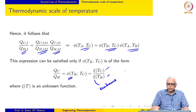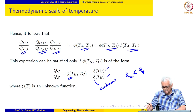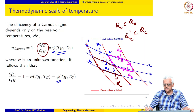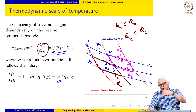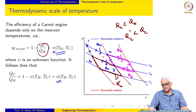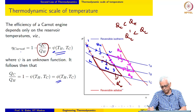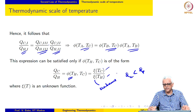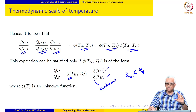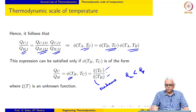Bearing in mind that QC is less than QH, as the reservoir temperature decreases, the heat interaction also decreases — provided we travel between the same two reversible adiabats. So Xe(TC) is placed in the numerator and Xe(TH) in the denominator to satisfy this constraint. Writing it the other way would not be consistent with heat interaction decreasing with decreasing reservoir temperature, so this is the correct form.